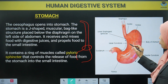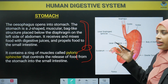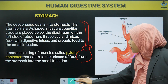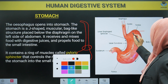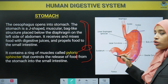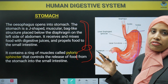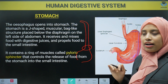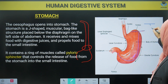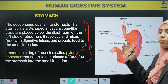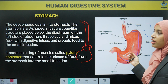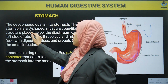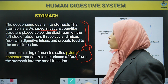Your stomach is roughly J-shaped. We draw J-shaped like this. It is not exactly J-shaped, but you can understand it is similar to it. So the stomach is a J-shaped structure and it is muscular.